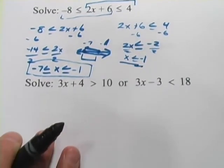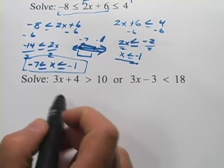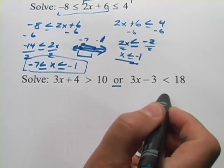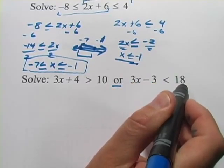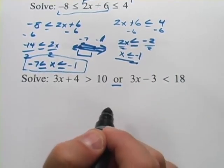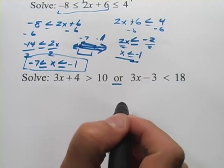Alright, one more. This one says solve 3x plus 4 is greater than 10 or 3x minus 3 is less than 18. So or is a little bit different than and but you start the same way, you're going to try to solve these for x. So let's do that.